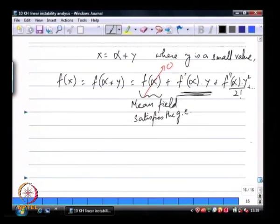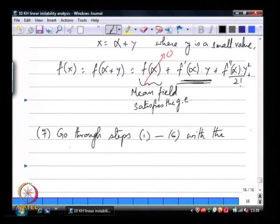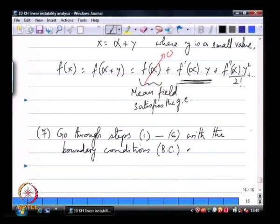This is step number 6. Step number 7, once we have the linearized equation, we went through the boundary conditions as well. What we have now is a complete homogeneous problem.